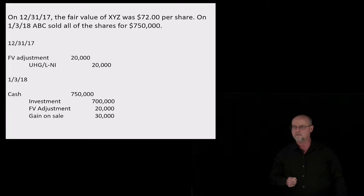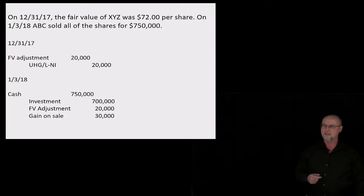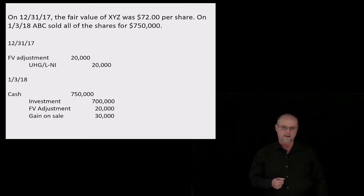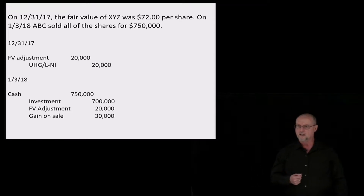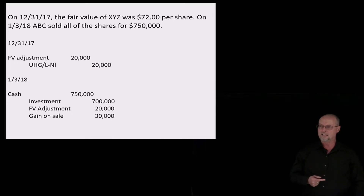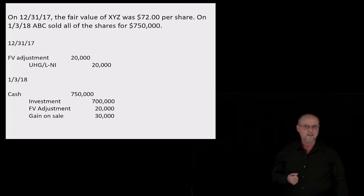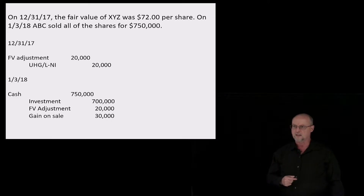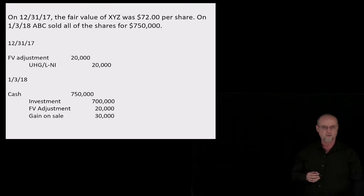Three days later, we sell the investment for $750,000. Debit cash $750,000; credit the investment account $700,000; credit the fair value adjustment account $20,000; and we recognize a $30,000 gain on sale in the following year. We made a total gain of $750,000, but $20,000 of that gain was recognized in the previous period on December 31st, and then $30,000 — the stock went up sharply in a short matter of time — we have a $30,000 gain in the new time period. That's very straightforward for fair value accounting.